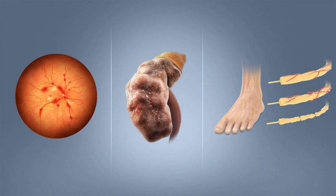The cause is unknown. Type 2 DM begins with insulin resistance, a condition in which cells fail to respond to insulin properly. As the disease progresses, a lack of insulin may also develop. This form was previously referred to as non-insulin-dependent diabetes mellitus, NIDDM, or adult-onset diabetes. The most common cause is a combination of excessive body weight and insufficient exercise.